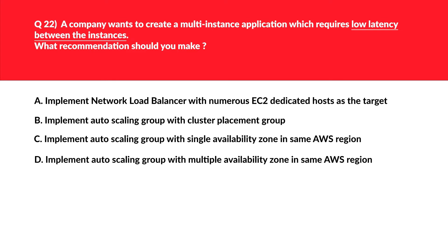This question is related to placement of EC2 instances — you need to be familiar with the concepts. Let's look at options C and D together: one uses a single availability zone and the other uses multiple availability zones. Whether you are implementing auto scaling within a single or multiple availability zone, it will not help in achieving low latency. Deploying across multiple AZs contributes to high availability, but that's not what the question requires.